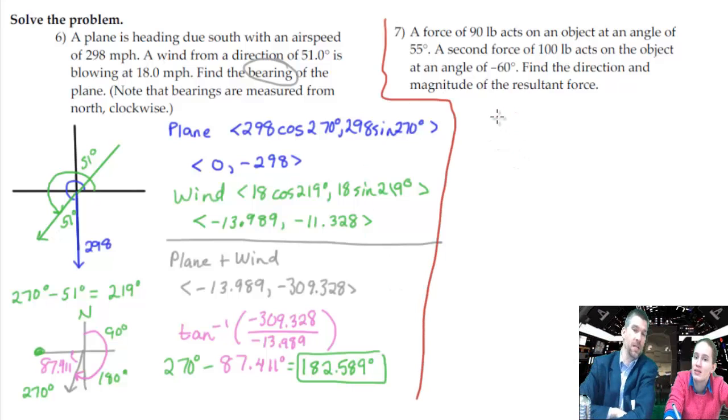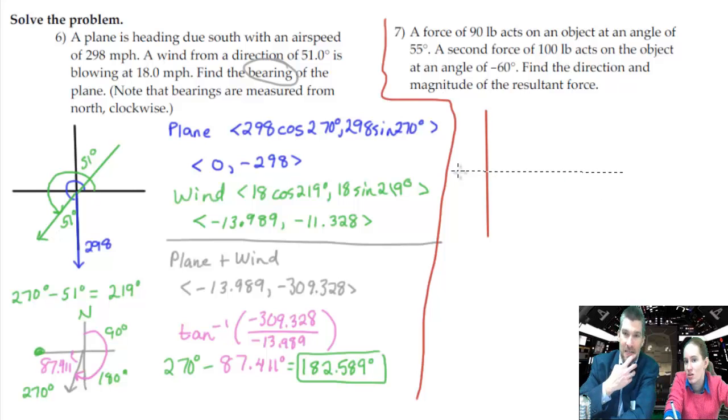So a force of 90... Oh, jeez, this one looks hard. A force of 90 pounds acts on an object at an angle of 55 degrees. Do you think that's a normal angle or a bearing? I feel like that's probably a normal angle. Say we're not flying an airplane here. We're not flying an airplane or driving a boat. Right. So I'm going to go with normal angle of 55 degrees. A second force of 100 pounds acts on the object at an angle of minus 60 degrees. Find the direction and the magnitude of the resultant force.